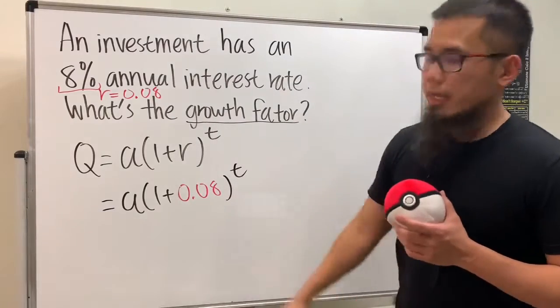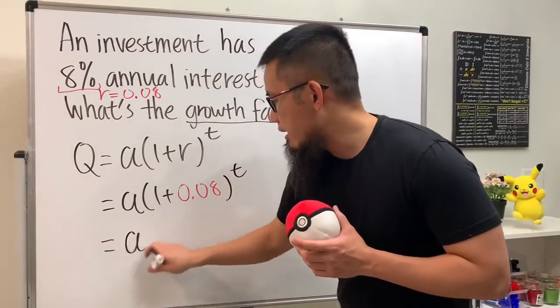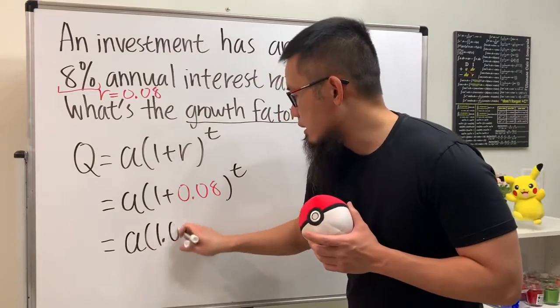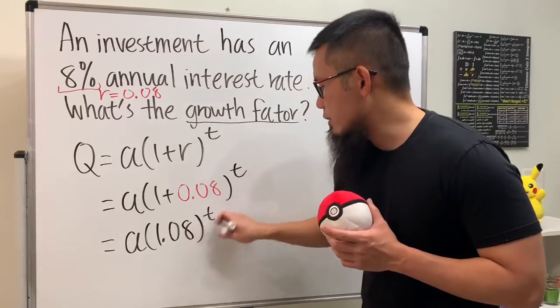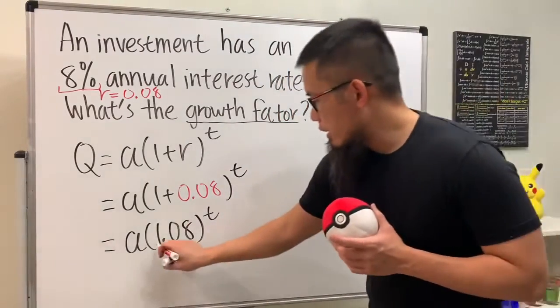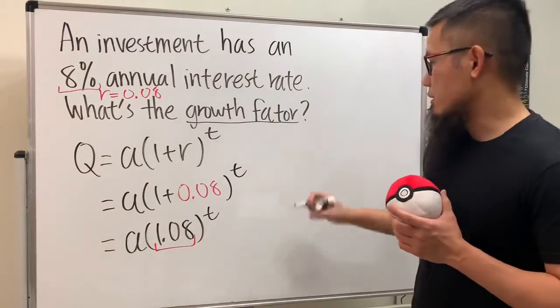raised to the t power. And then we can just add this and that together, so we get a times (1.08) raised to the t power. So this right here will be the growth factor. Let me